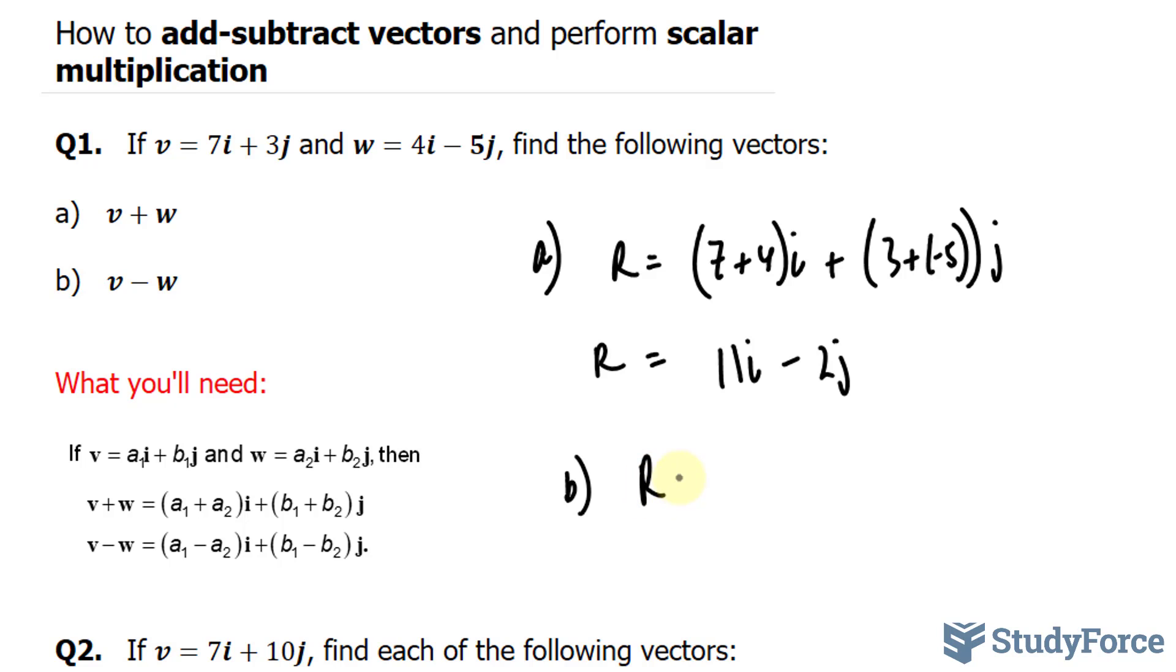So our resultant vector r is 7 minus 4 plus 3 minus negative 5. Subtracting these two numbers, we end up with 3i, and subtracting these, we have plus 8j.